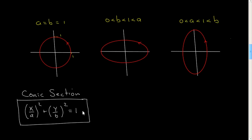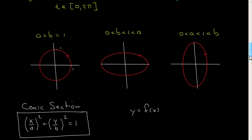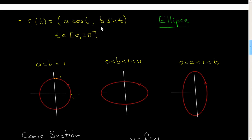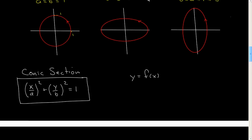One final point: if you wanted to describe these curves using y = f(x), you could solve for y in terms of x, but you would have to have two branches — an upper branch and a lower branch — getting a plus-or-minus square root. It would be quite messy, whereas this parameterization is quite easy and natural, and it gives us very easily the lengths of what are called the semi-major and semi-minor axes of an ellipse.